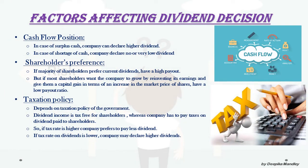Next is the cash flow position of the company. If the company has surplus cash, it may declare higher dividends. In the case of a shortage of cash, the company may declare no or very low dividends and may retain more as retained earnings.